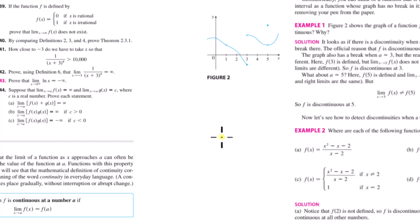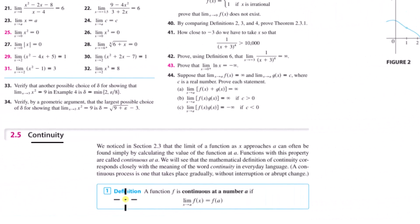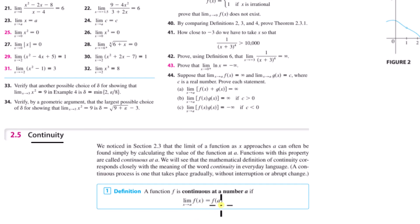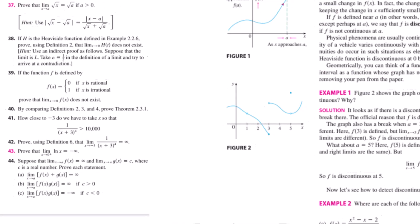The pen-on-the-page analogy I always found to be really helpful. But here's the official definition: a function f is continuous at a number a if the limit as x approaches a of f(x) is equal to f(a).